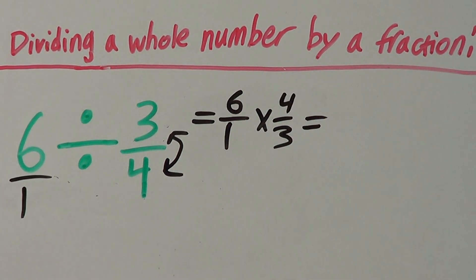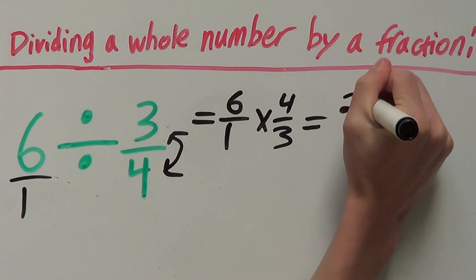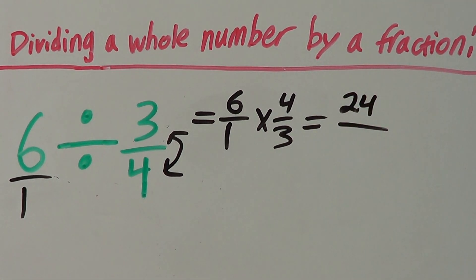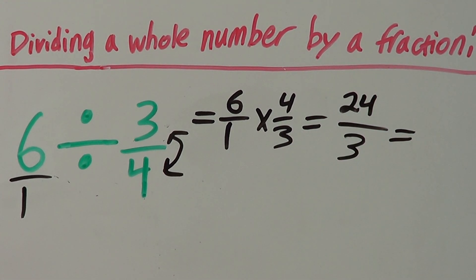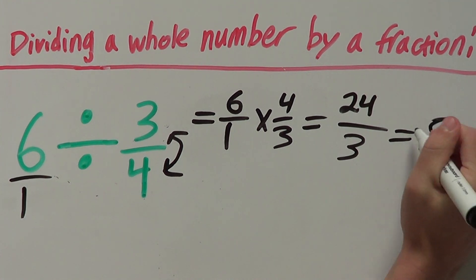And from there, we can simply solve this by multiplying across. So, 6 times 4 is 24 and 1 times 3 is just 3. And this can be simplified because 24 over 3 is just 8.